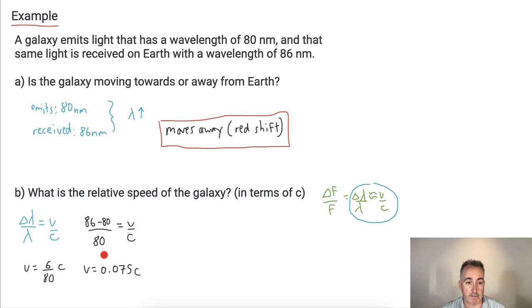So I can say that's my final answer. In other words, I'm going 0.075 the speed of light. Now I could also say this is actually 7.5% the speed of light, because that's another way to say it.